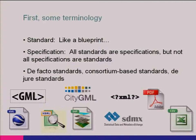The nice thing about open standards is that there are many to choose from. In the geospatial domain, we have standards such as KML, GML, and CityGML. There are some formats such as shapefile that are so popular they're almost standards in themselves. We exchange data in a variety of formats: CSV, XML, JSON, even PDF. Other domains such as statistics have their own standards such as SDMX, which I've never actually used.